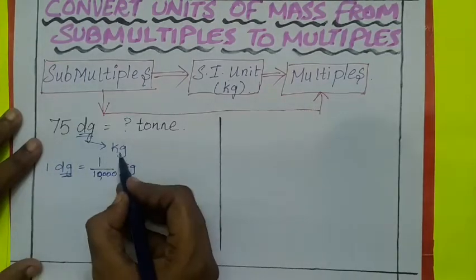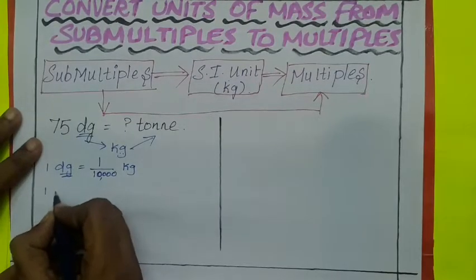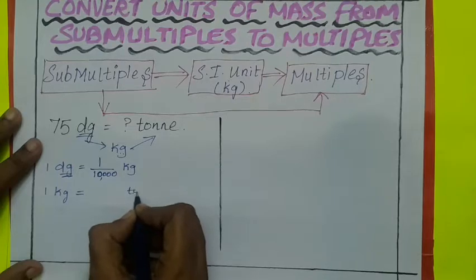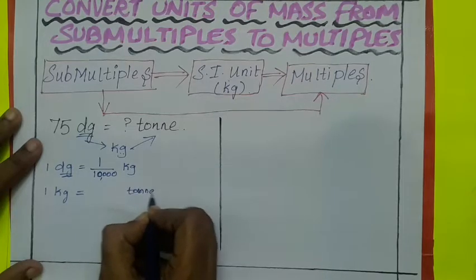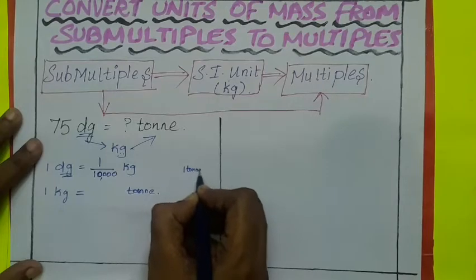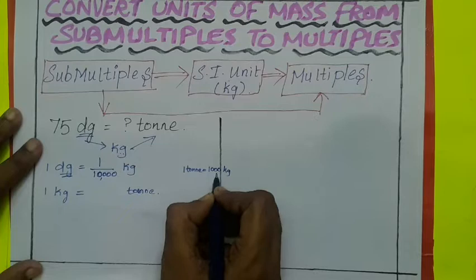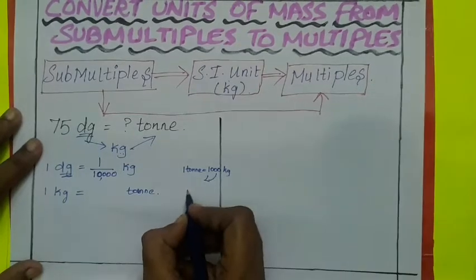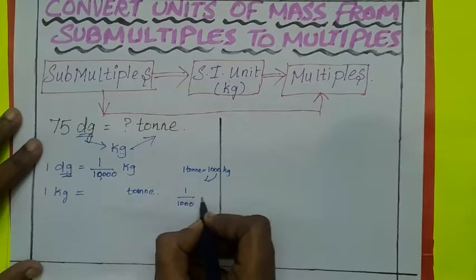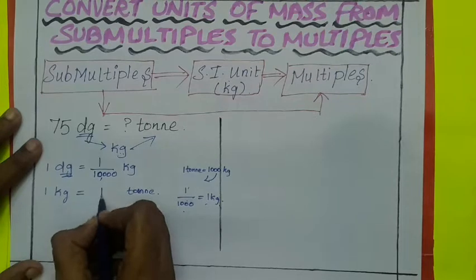Next convert kilogram into ton. 1 kilogram is equal to how many tons? We already know 1 ton is equal to 1000 kilogram. Bring it to left hand side. 1 by 1000. 1 kilogram is equal to 1 by 1000 ton.